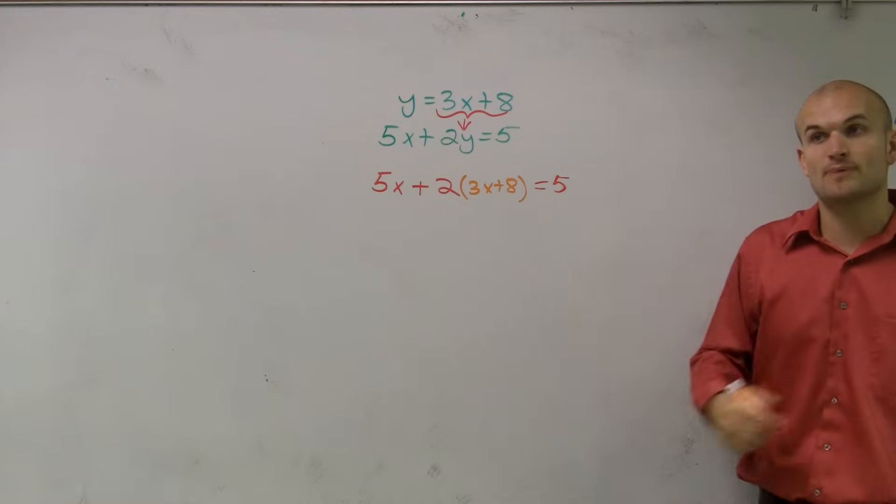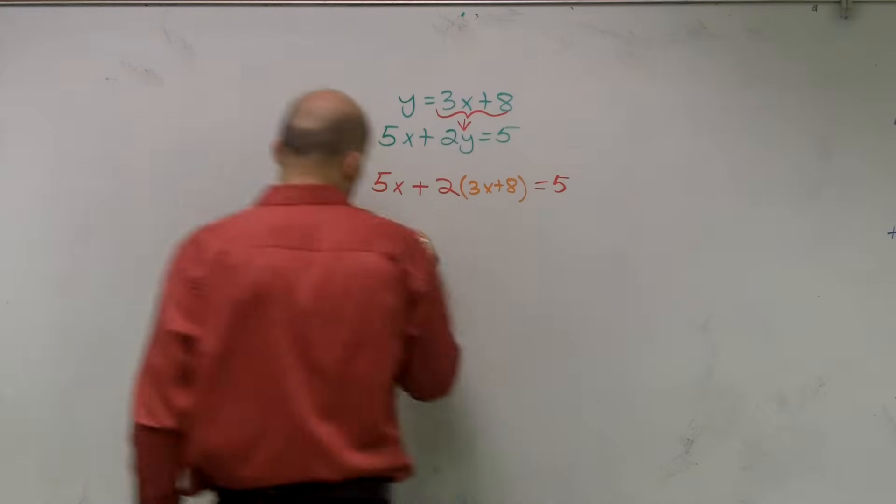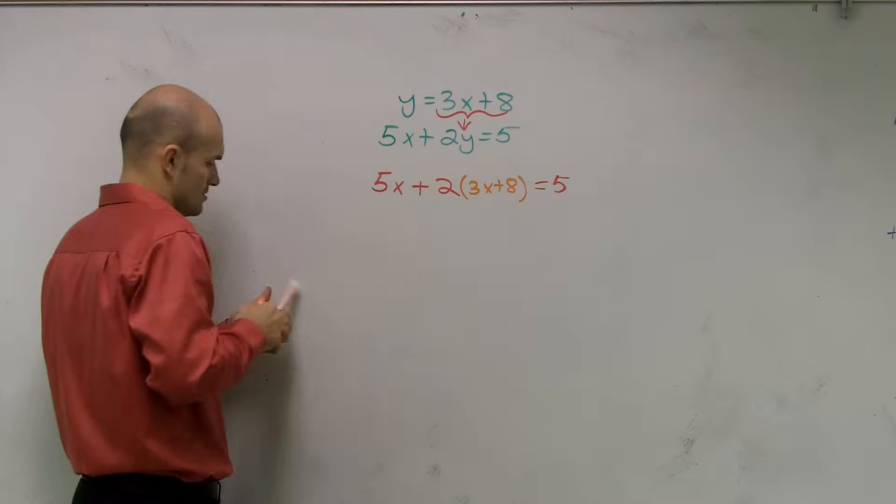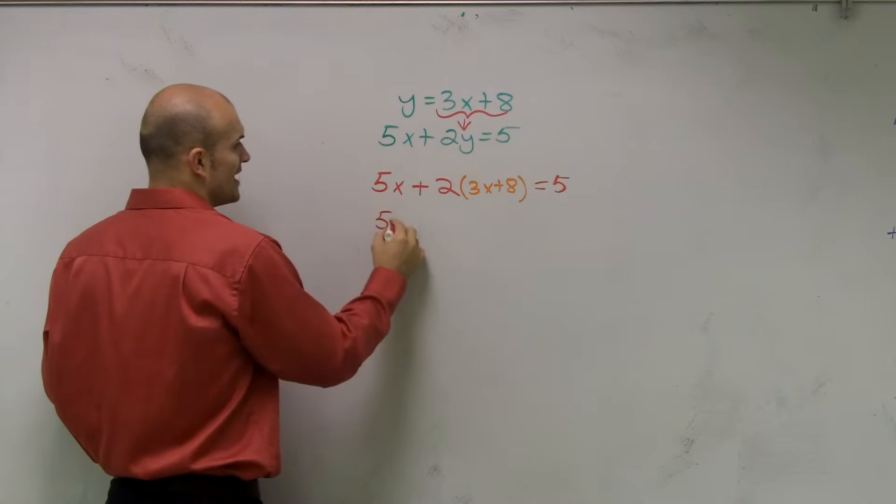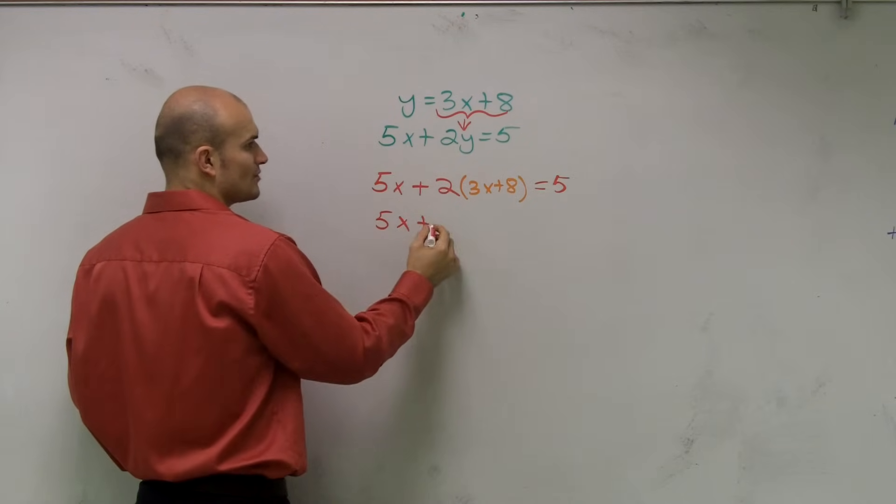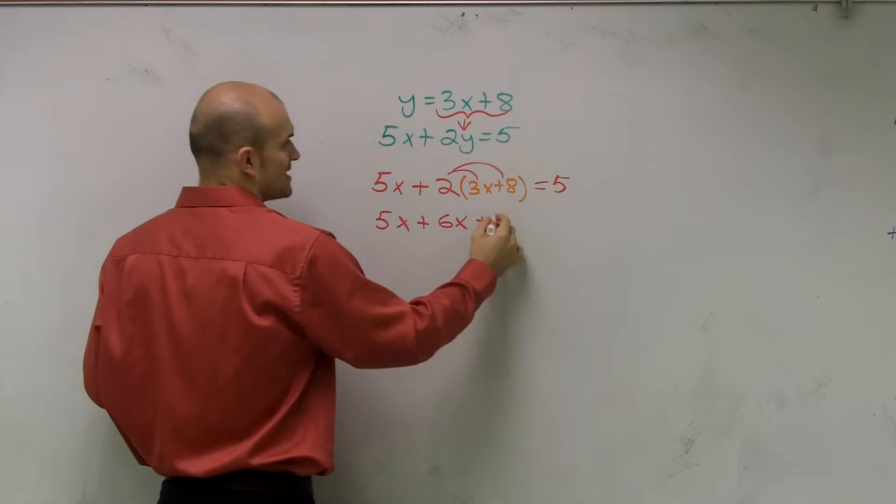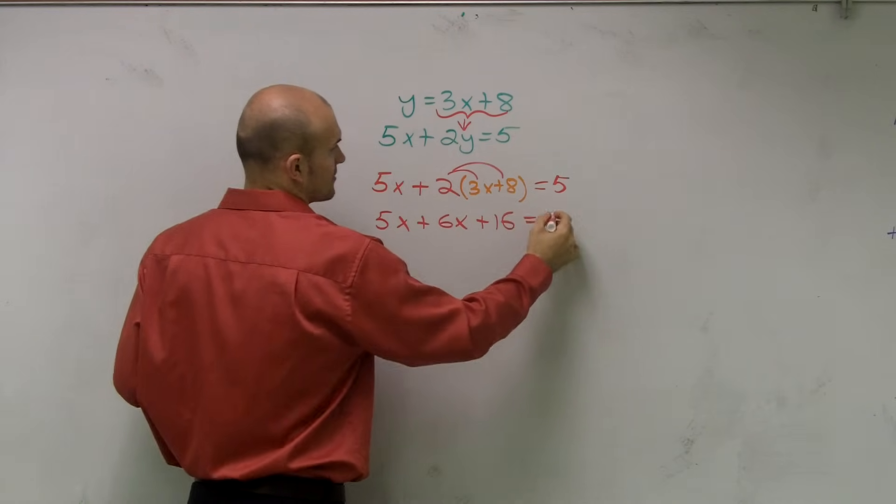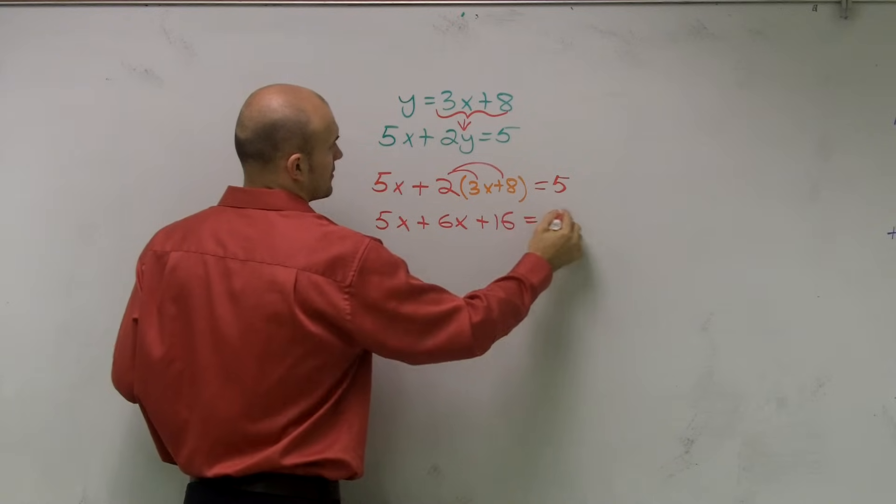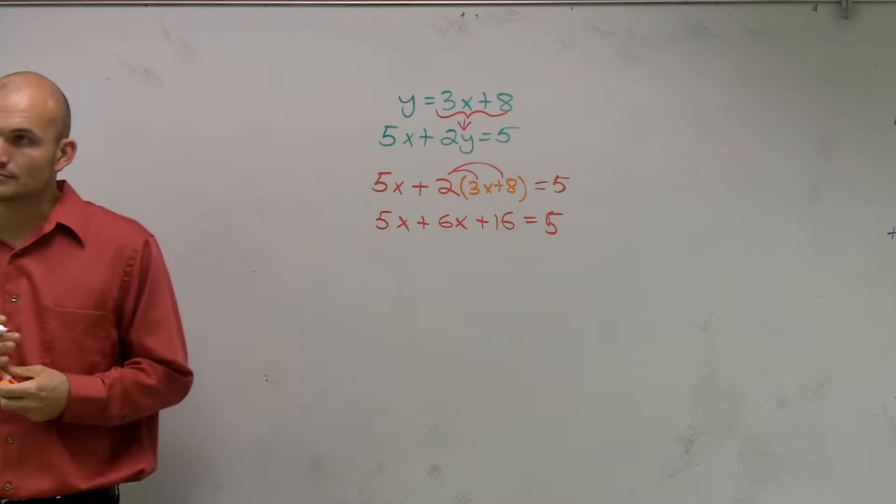So remember when we have a number with parentheses, we need to use distributive property. So therefore, I have 5x plus 2 times 3x is 6x. 2 times 8 is a positive 16 equals 5.